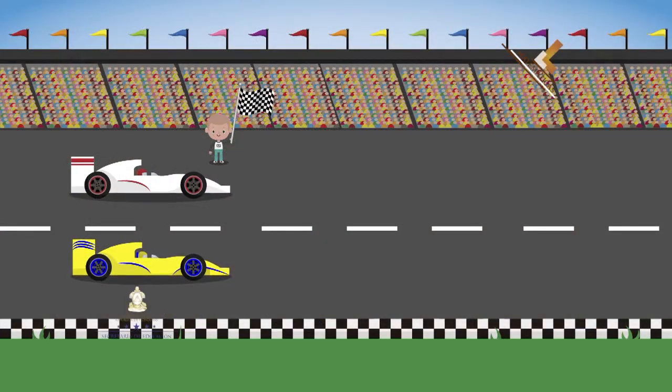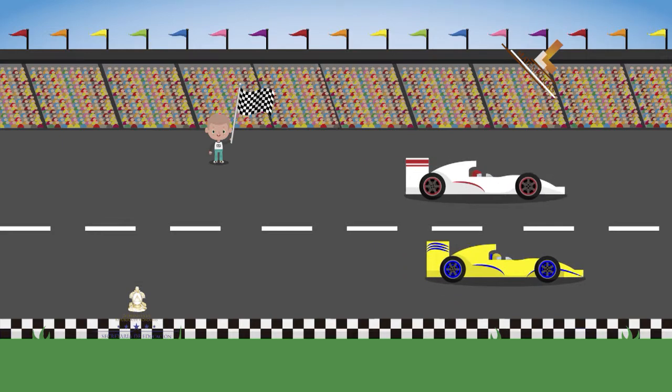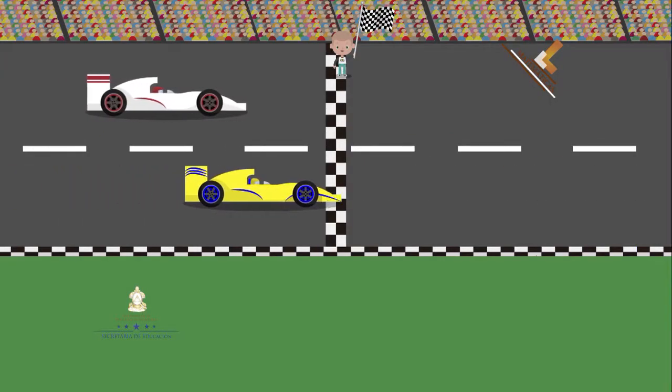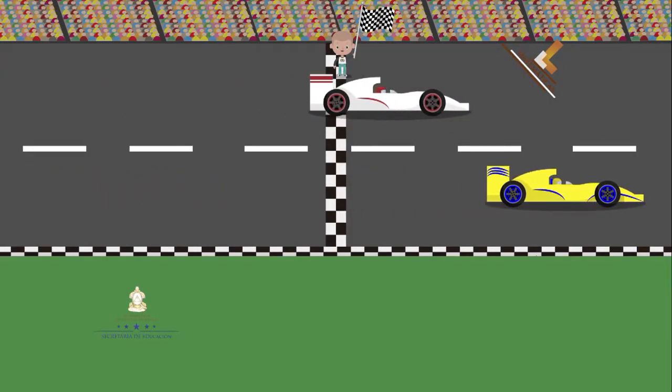Preparados para la carrera. Enciendan sus motores. En sus marcas, listos, fuera. El ganador es el auto amarillo. Descubramos cuál es la diferencia final entre ambos autos.